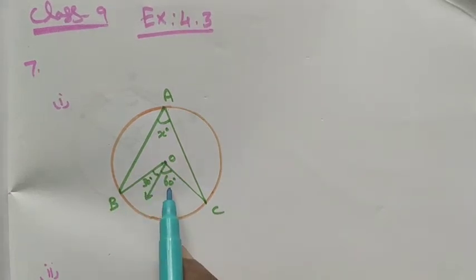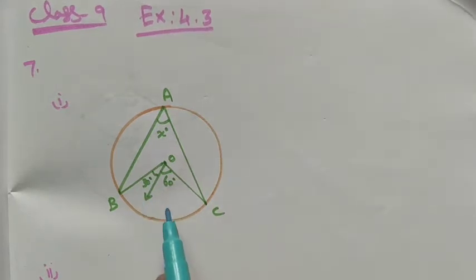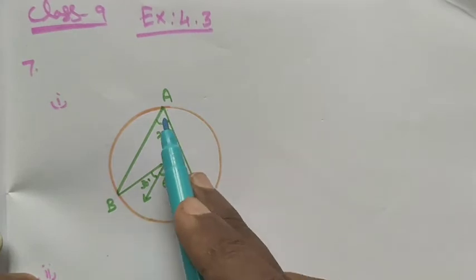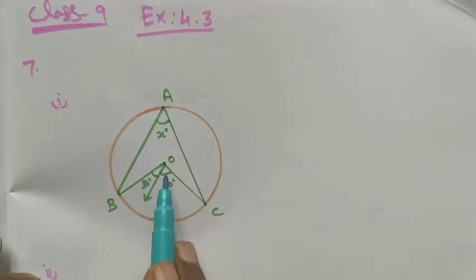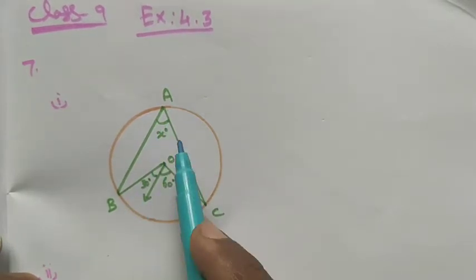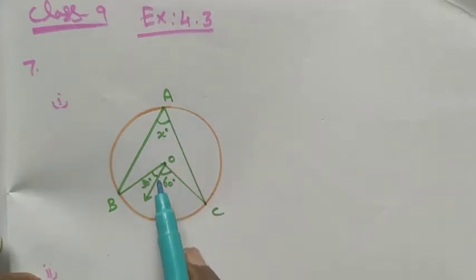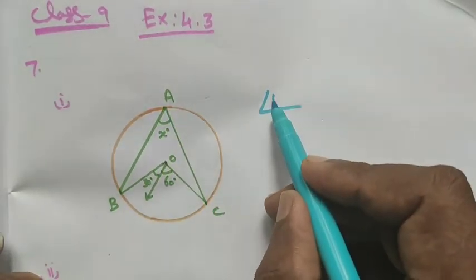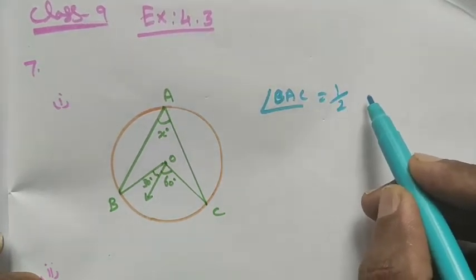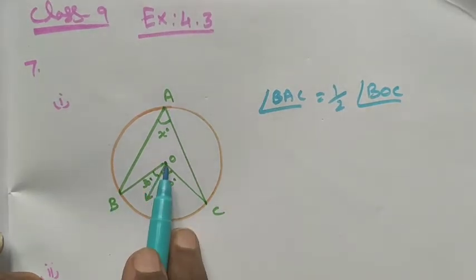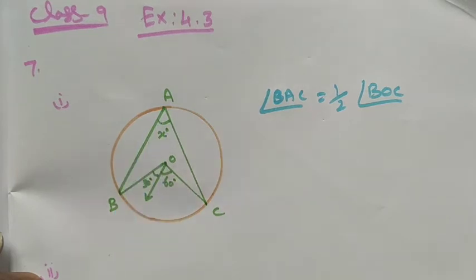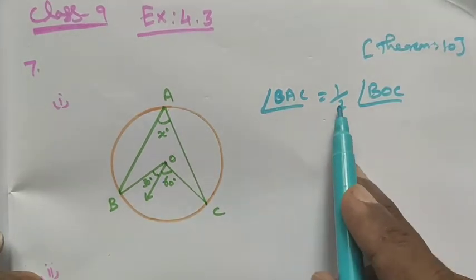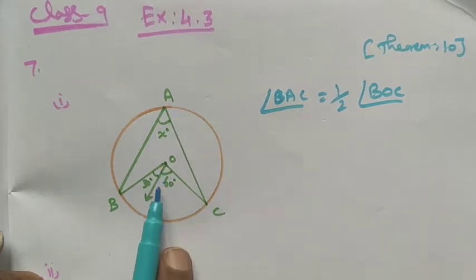Angle BOC is 30 degrees plus 60 degrees, which equals 90 degrees. We know theorem number 10: the central angle is twice that of the angle subtended on an arc or circumference. If this angle corresponds to this one, it will be the same; if this angle comes to this one, it will be double — twice the central angle. So angle BAC is equal to half of angle BOC, and BOC equals 30 plus 60.